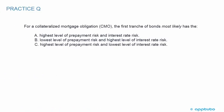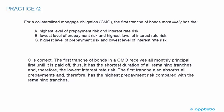For a collateralized mortgage obligation, the first tranche of bonds most likely has: A. the highest level of prepayment risk and interest rate risk; B. the lowest level of prepayment risk and highest level of interest rate risk; or C. the highest level of prepayment risk and lowest level of interest rate risk. C is correct. The first tranche receives all monthly principal first until it is paid off, giving it the shortest duration and therefore the lowest interest rate risk. It also absorbs all prepayments and therefore has the highest prepayment risk compared with remaining tranches.